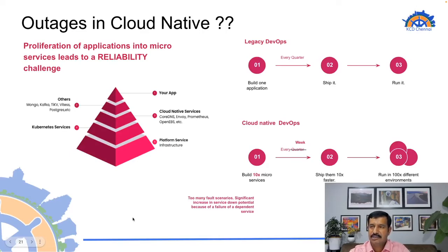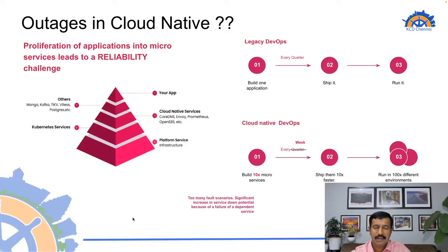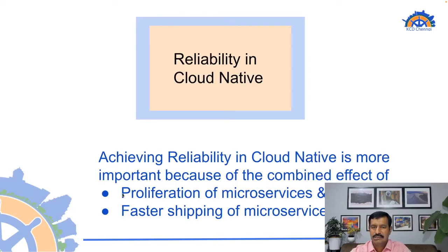Another important thing in cloud native is how fast things are being shipped. Changes to your stack happen ten times faster than in a legacy system, so there is a continuous change of stack happening all the time. Pod deletes can happen anytime, on top of regular infrastructure, operational, or application failures. Outages can happen more often if you're not proactively taking care of it — that's why we're talking about reliability as a separate subject in cloud native today.